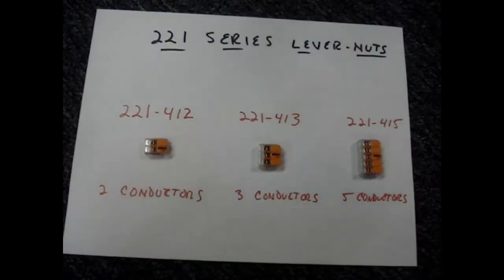There are three sizes of 221 series lever nuts that accept American wire gauge 12-24 solid, stranded, or fine stranded.